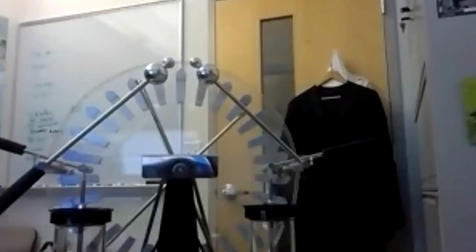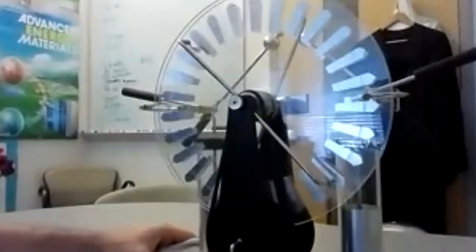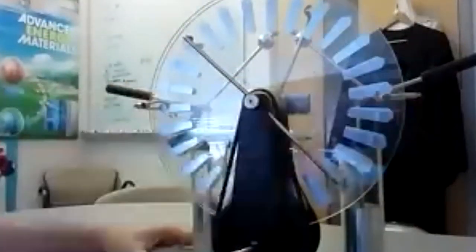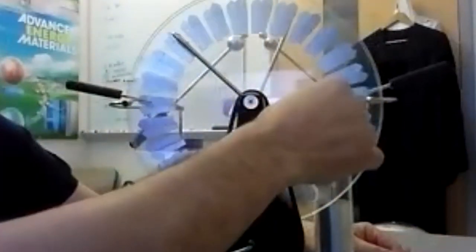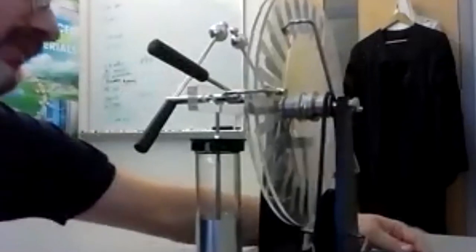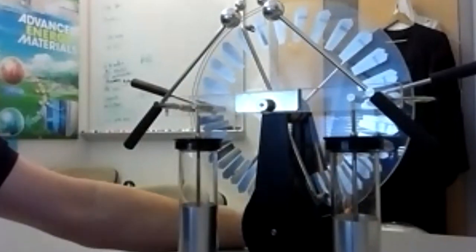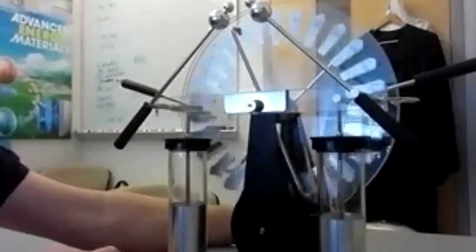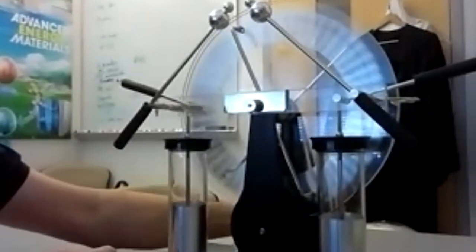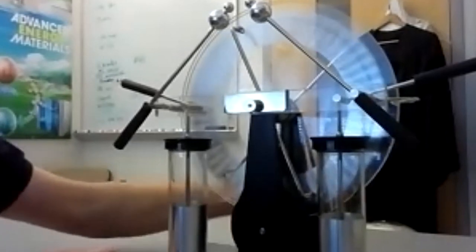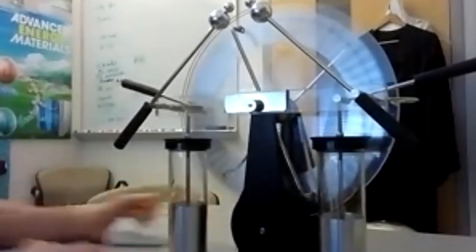What I have here is called a Wimshurst machine. And basically, you can see it has a crank to rotate these two discs. And these are collectors here, which collect the charge where it rubs against the plastic discs. And then it's collected in these so-called Leiden jars. Now, if I crank this, nothing happens. But if I crank enough,